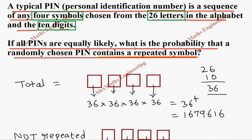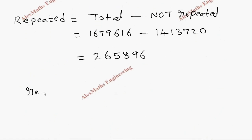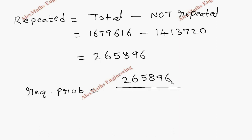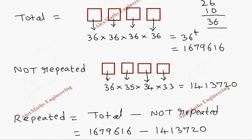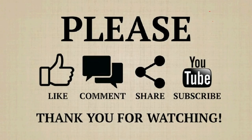The question asks for the probability that a randomly chosen PIN contains a repeated symbol. The required probability is the number of repeated-symbol PINs divided by the total: 265,896 divided by 1,679,616. After division, the answer is approximately 0.1583.